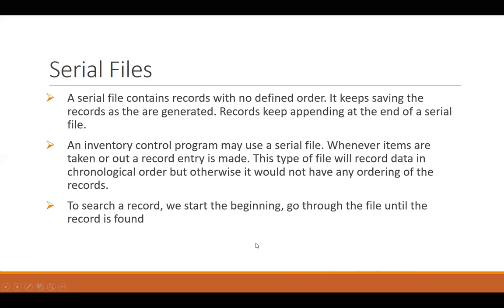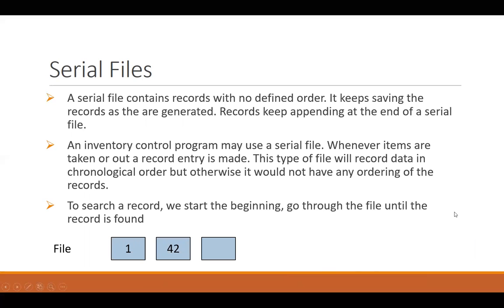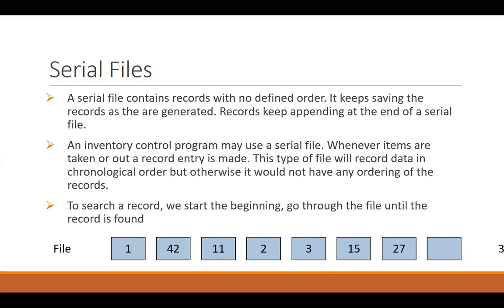If we need to search for a particular record in a serial file, we need to start at the beginning and go through the file, comparing each record with our search value until our desired record is found. The items are just appended — added at the end of the file as they came. There is no sequence in them; each record is stored in the file as it came along.